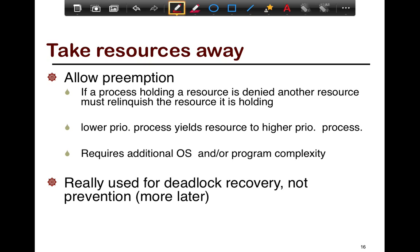Finally, taking resources away — this is about preemption. If a process is holding a resource and is denied another resource, it must relinquish the resource it is holding. For example, a lower priority process yields a resource to a higher priority one; a specific example would be monitors. This requires additional programming complexity because the minute you start taking away resources from a thread, it lands in exceptional conditions and you need a way to recover. Realistically, preemption is more of a recovery technique than a prevention technique.